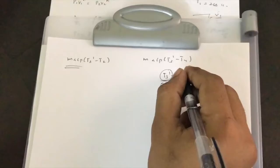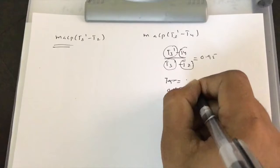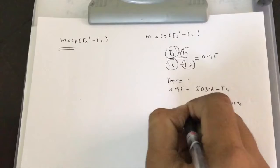Substituting the values: 0.95 = (503.8 - T4) / (503.8 - 301.4). Solving for T4 gives T4 = 311.5 Kelvin.